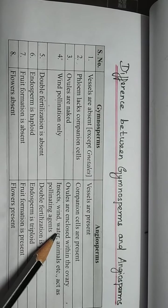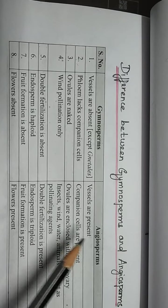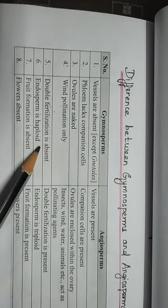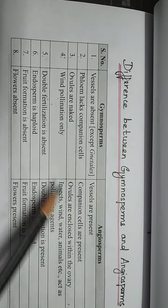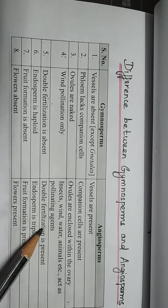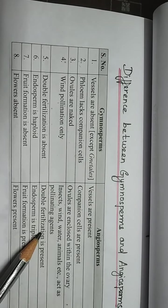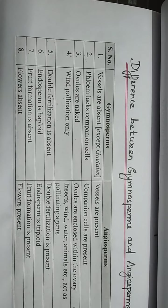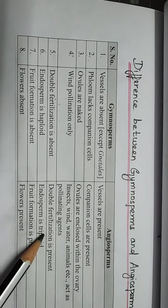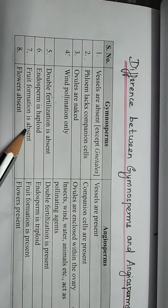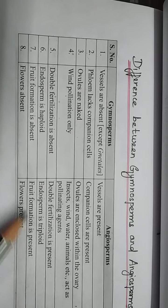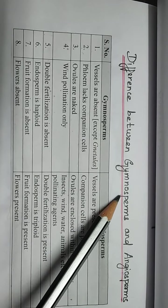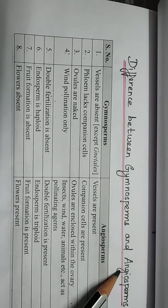In angiosperms, insects, wind, water, and animals are some of the pollinating agents involved. Double fertilization is absent in gymnosperms, whereas double fertilization is present in angiosperms with two male gametes involved. The endosperm is triploid in angiosperms. There is fruit formation in angiosperms. Flowers are absent in gymnosperms and flowers are present in angiosperms. These are some of the important characters showing the difference between gymnosperms and angiosperms.